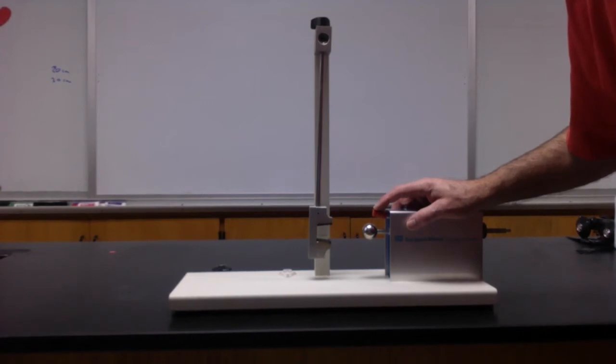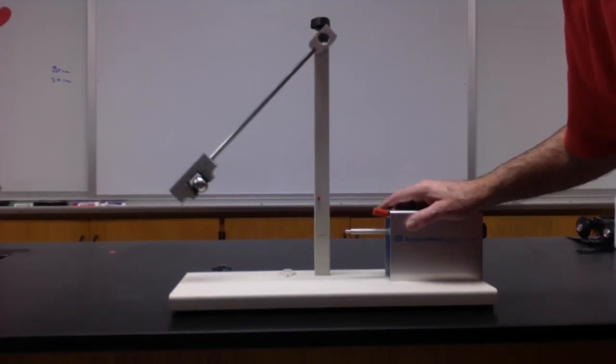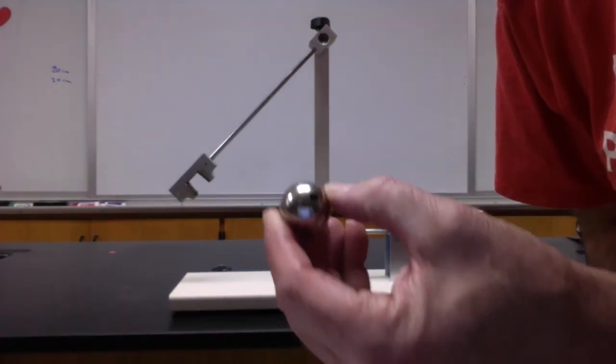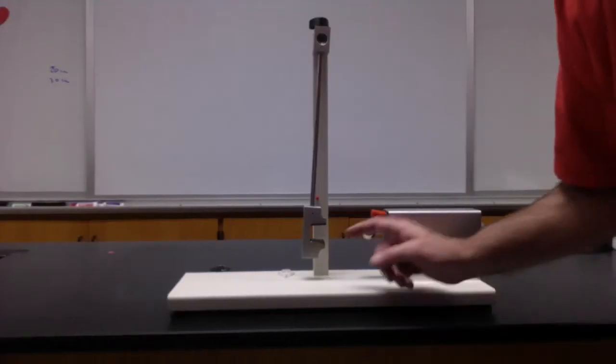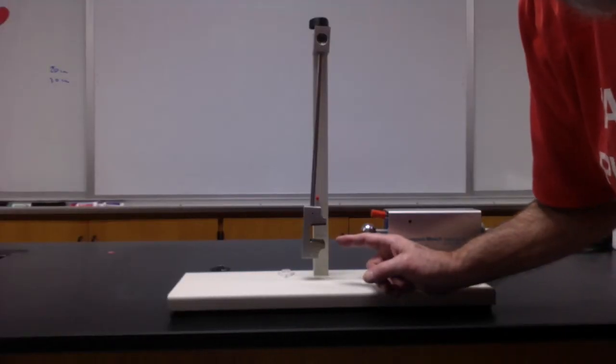Your goal is to find the velocity of that ball just at the launch. You're going to need the mass of the ball, that's 63.5 grams. The mass of the catcher is 100.5 grams, and we're going to assume this rod is massless and all the mass is right here.